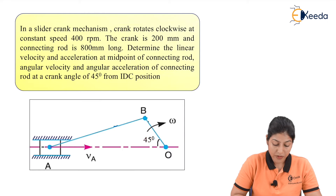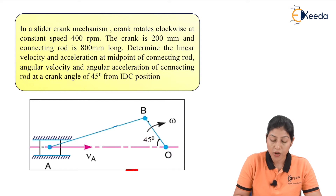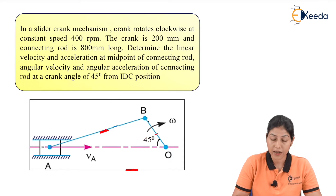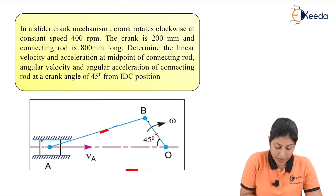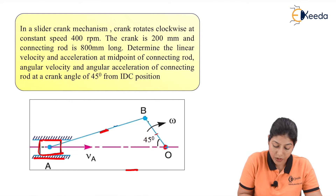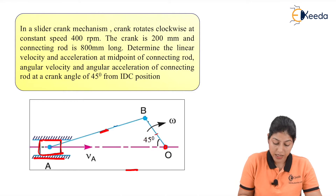In this numerical we have a slider crank mechanism with four links. BO represents the crank, AB represents the connecting rod, A represents the slider, and the other is the fixed link. The slider is sliding about this fixed link. Point O is also on the fixed link, so this crank is rotating with respect to point O.